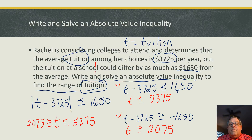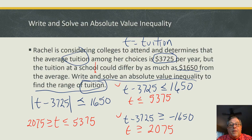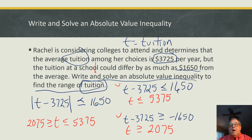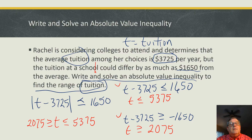You might ask: why go through all of that? If I look at the information, I could just say $3,725 is the average — add $1,650 to get $5,375, subtract it to get $2,075. Why write the absolute value inequality? Because we were told to. We had to express it that way. Many times there's more than one way to solve, but tip number one: follow your instructions, and part of our instructions was to write the absolute value inequality.